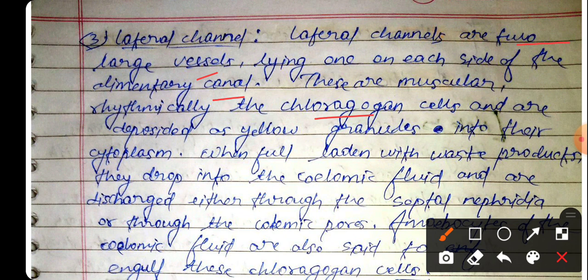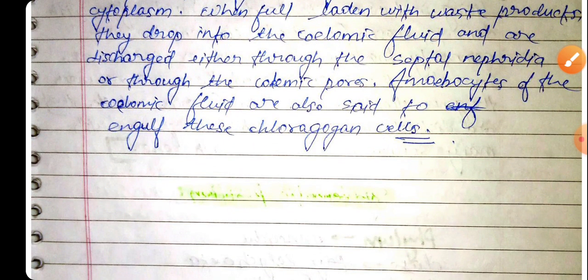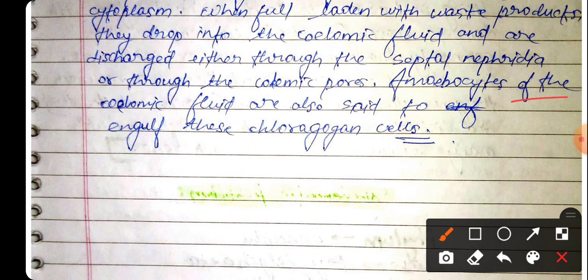When fully laden with waste products, the chloragogen cells drop into the coelomic fluid and are discharged through the septal nephridia. The amoebocytes of the coelomic fluid are also said to engulf these chloragogen cells.